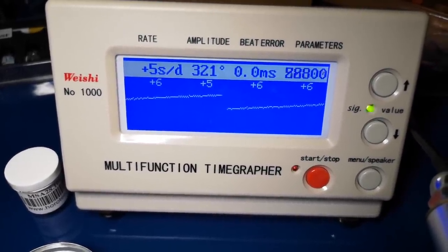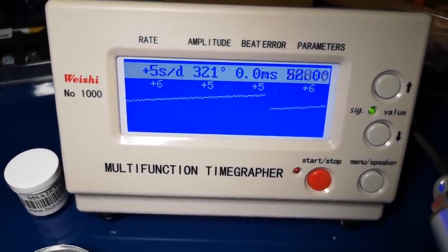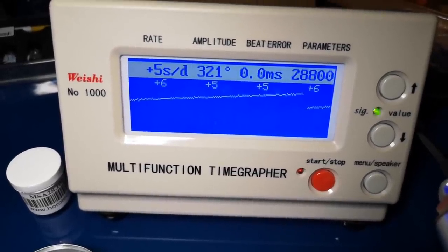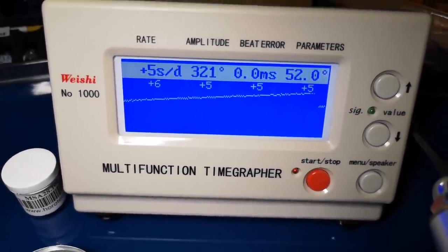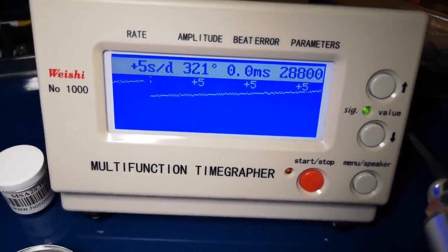Because as you can see the watch is running on rails there - zero beat error, 321 degrees, and plus five seconds a day. And it's as steady as a rock. Let's take one last look at this gorgeous dial.